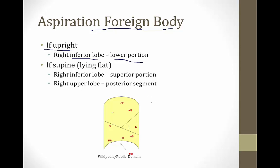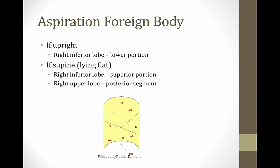If a child aspirates a foreign body while supine or lying flat, then the posterior portions of the lung become most gravity-dependent. The foreign body can end up in one of two places: the posterior portion of the upper lobe, or the superior portion of the inferior lobe. Different textbooks list different sites because there are two gravity-dependent sections when a patient is supine.